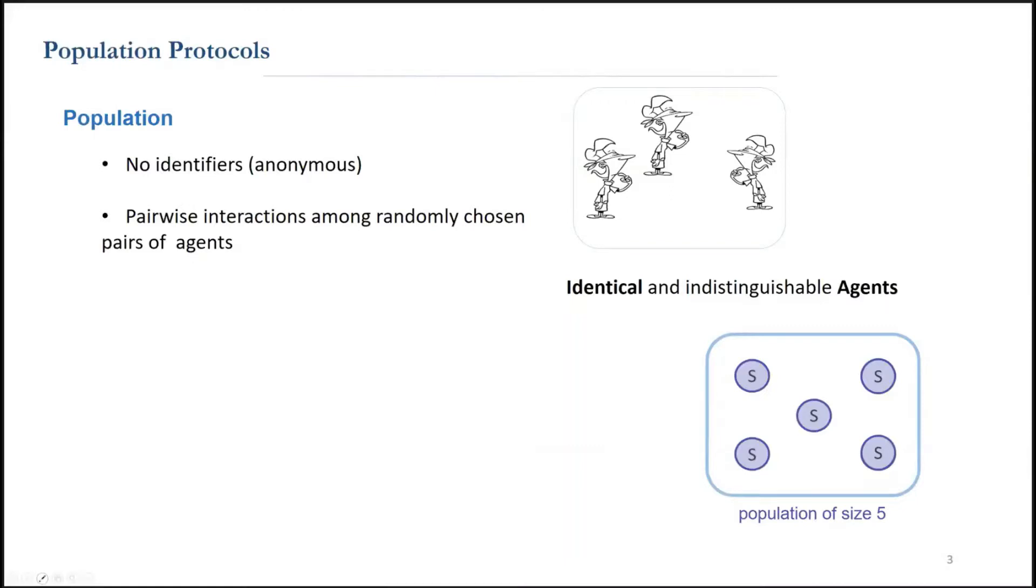A population is a set of identical and anonymous entities that we call agents. The agents communicate through random pairwise interactions. In every interaction, a random scheduler selects another pair of agents independently and uniformly at random.